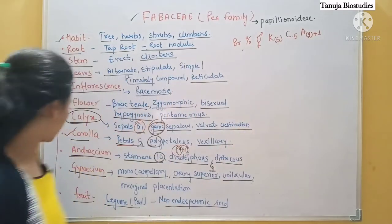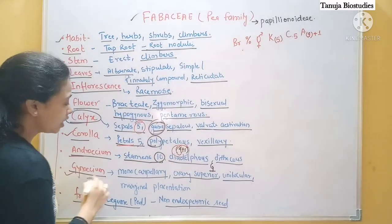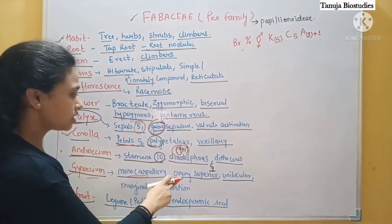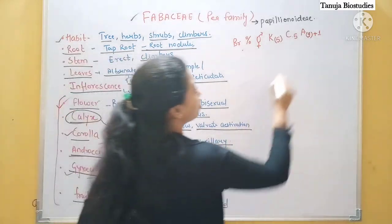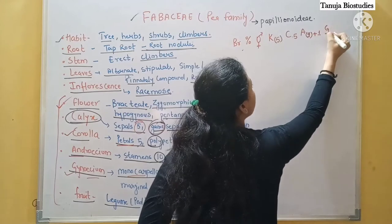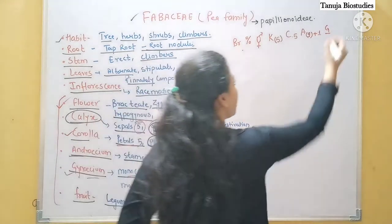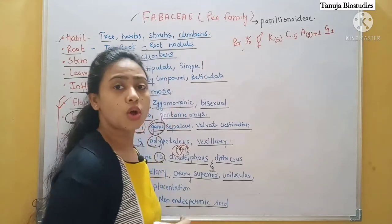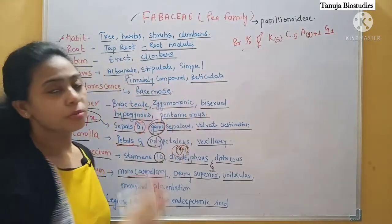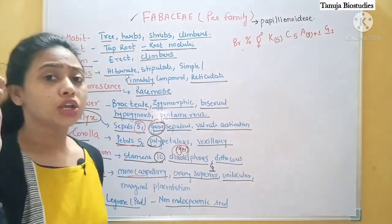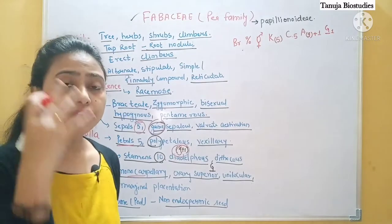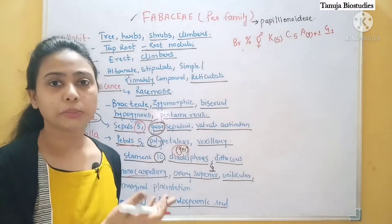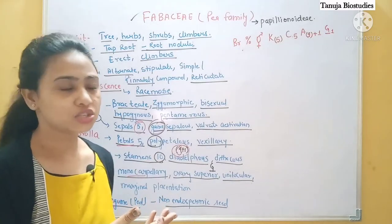Then for the gynoecium, there is one carpel. The ovary is superior, so I will show it as superior — only one carpel is there. So this is how we have the floral formula. If you are given flower information in written form, you should be able to write the formula.